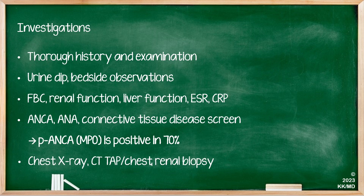In terms of investigations, it's really important to have a systematic order when presenting and discussing your investigations, especially for PACES. You would want to do a thorough history and examination targeting your findings by system. You would also want to take basic bedside observations — checking heart rate, blood pressure, temperature — and calculating a NEWS score to ensure the patient is haemodynamically stable. A urine dipstick is easy to perform and will crucially tell you whether the patient has renal involvement through haematuria or proteinuria.